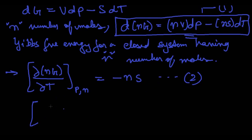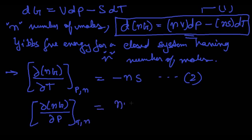Also, if I consider G at constant temperature, then the dT term eliminates because at constant temperature dT is zero. So I can write (∂(nG)/∂P) at constant T and N equals nV. These are the two equations we have obtained, and now I am going to state the appropriate conditions for which equations 2 and 3 are applicable.